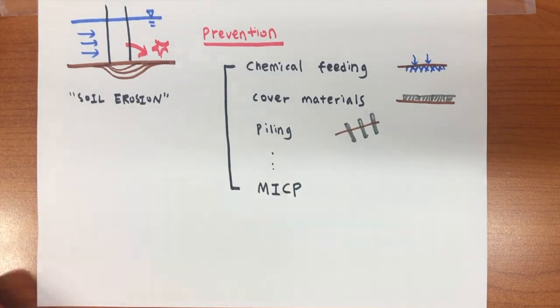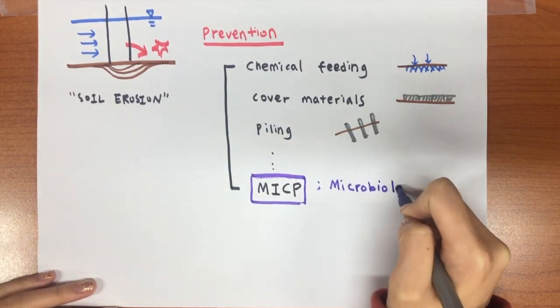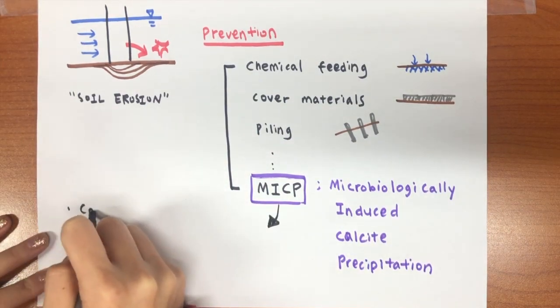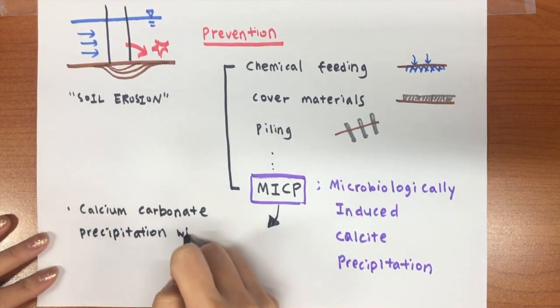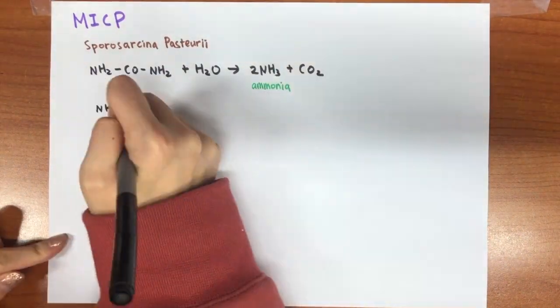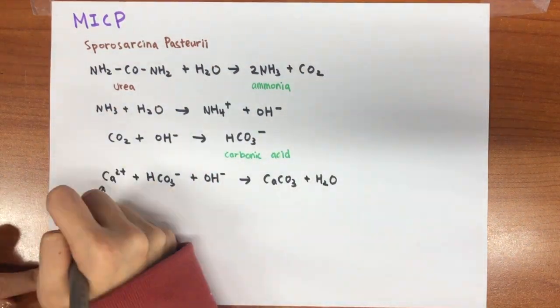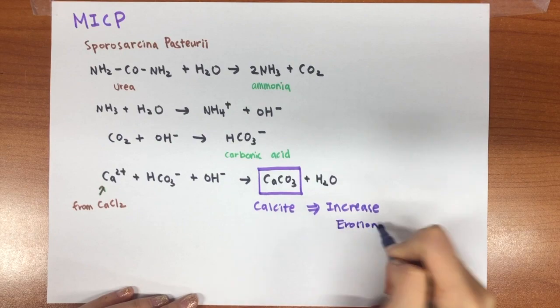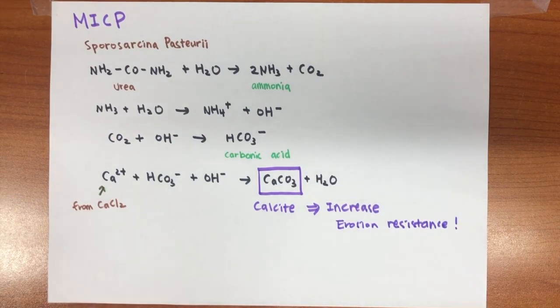Among them, MICP has received increased attention as a new, green, economic, and sustainable technique. This is a biogeochemical process which uses chemistry and microorganisms to improve soil properties. The produced carbonate accumulates at particle contacts, contributing to additional cementation and increased soil erosion resistance.